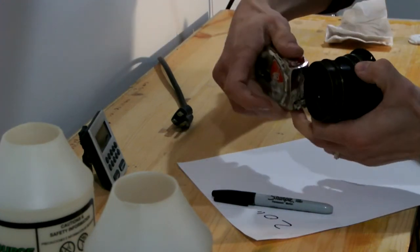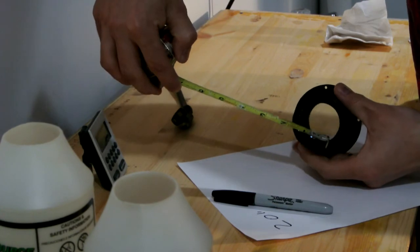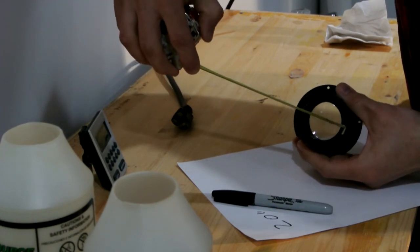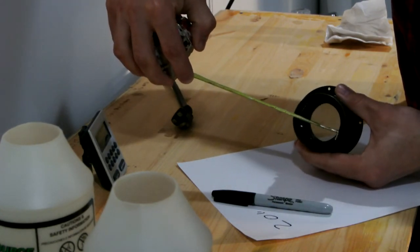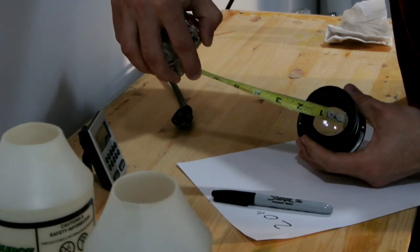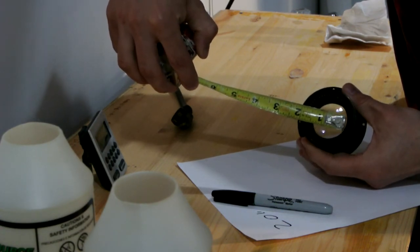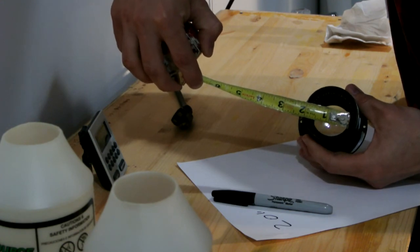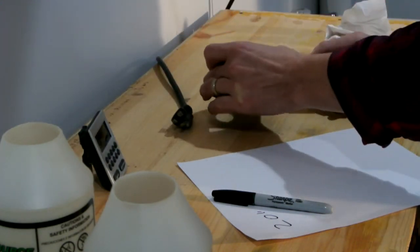So what I'm going to do is take my tape measure and measure the, not the outside lens barrel of the lens, but the inner element, the actual glass. So that gives me roughly, roughly, that gives me 1.75 inches.